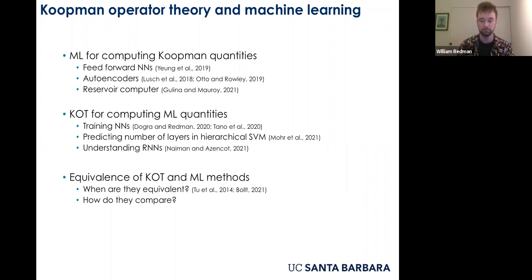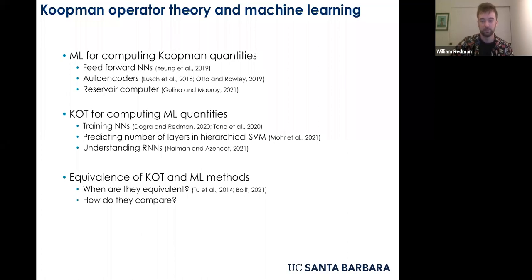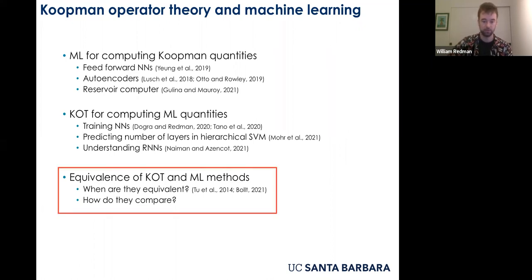That third intersection — actually the oldest — is asking when Koopman and certain machine learning methods are equivalent. This was most famously shown with dynamic mode decomposition, which can be equivalent to a Koopman mode decomposition. Recently there's also been work showing Koopman can be equivalent to reservoir computing. Noting these equivalences gives the Koopman community more tools to compute Koopman modes, and allows more grounded comparisons between Koopman methods and other machine learning methods.